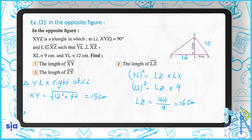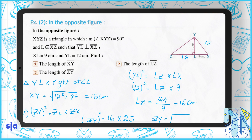For question three: to find ZY, we use ZY² = ZL × ZX. ZX = ZL + LX = 16 + 9 = 25. So ZY² = 16 × 25 = 400, therefore ZY = √400 = 20 centimeters.